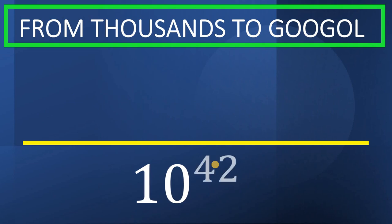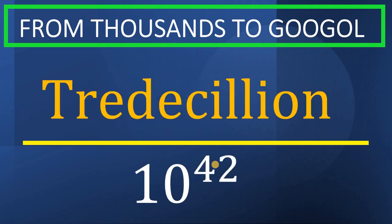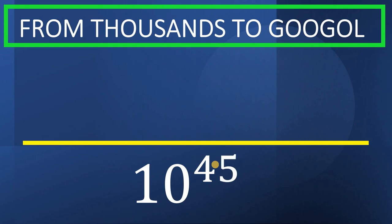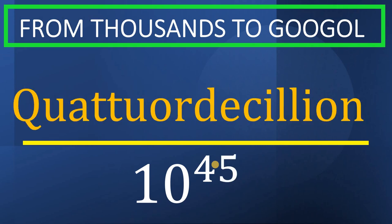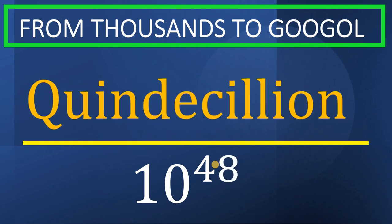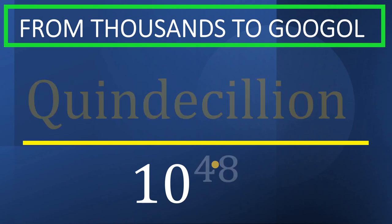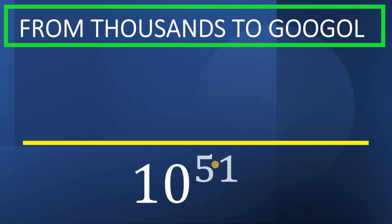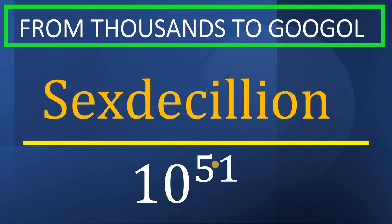10 raised to 42, it is tredecillion. 10 raised to 45, it is called quattuordecillion. 10 raised to 48, it is called quindecillion. 10 raised to 51, it is called sexdecillion.